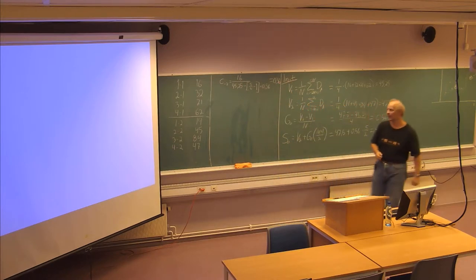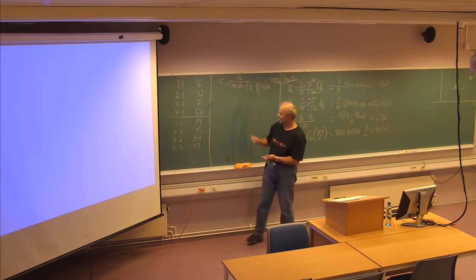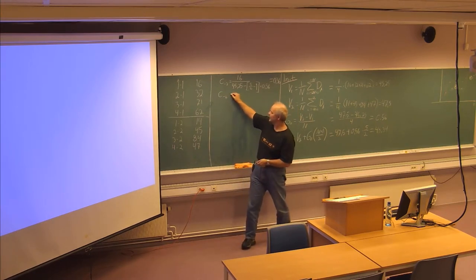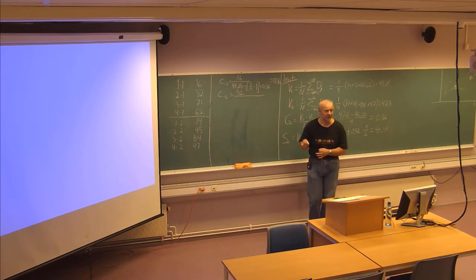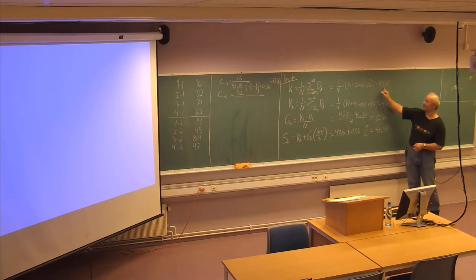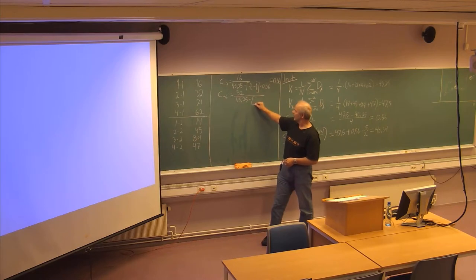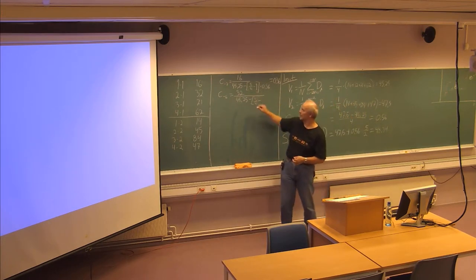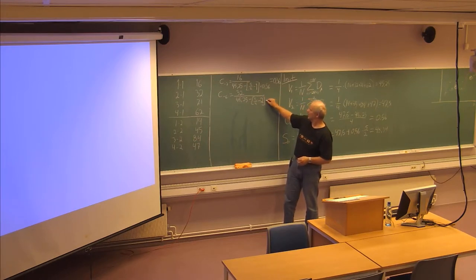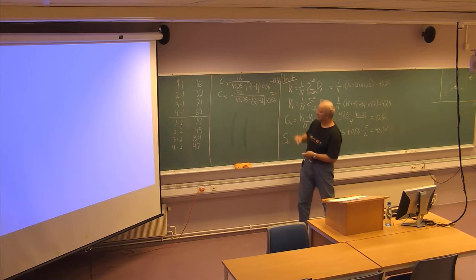Then we find the seasonal factor for period number 2, which is period minus 6. The demand is 32. We are in period number 2, so J equals 2, multiplied by 0.56, which gives a value of 71%, or 0.71.